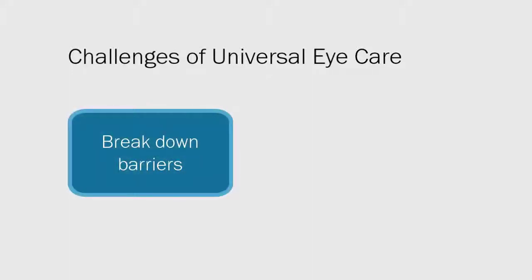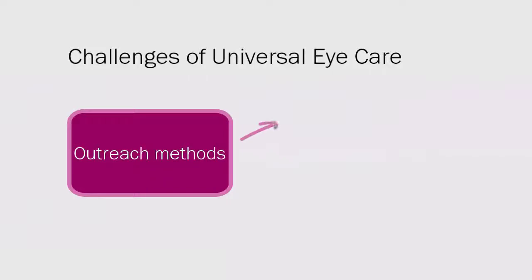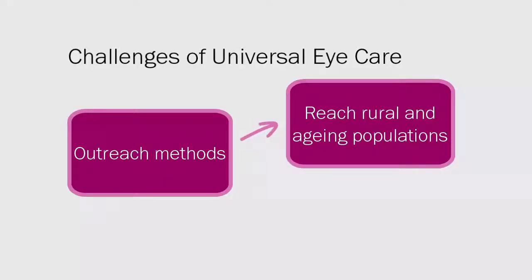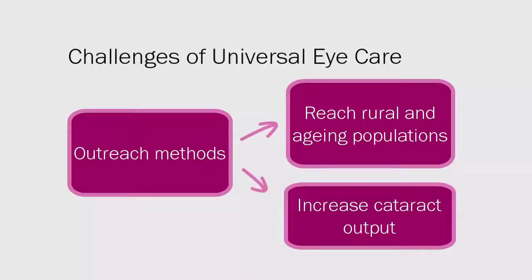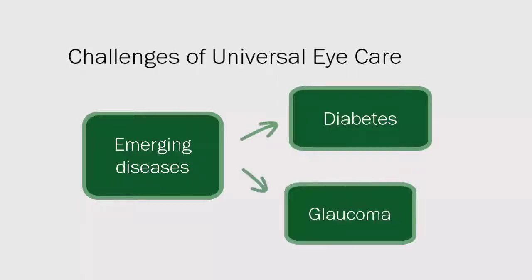There are several challenges to delivering universal eye care at the local level. At a community level, it is essential to break down barriers and make services both accessible and affordable. Eye care providers need to consider methods of outreach to reach blind and visually impaired people in rural areas. This will cater for ageing populations and increase output for cataract surgical services. Eye care services also need to become aware of, and plan for, the growing challenge from emerging non-communicable diseases such as diabetes and glaucoma.